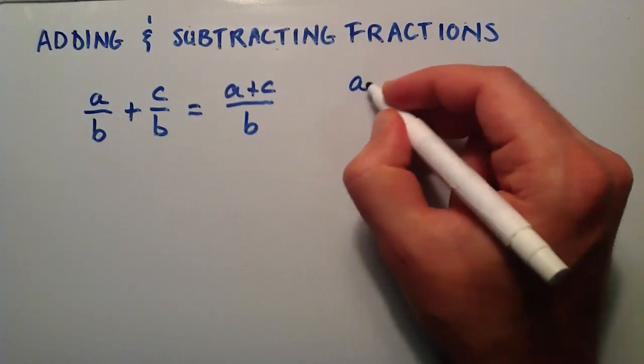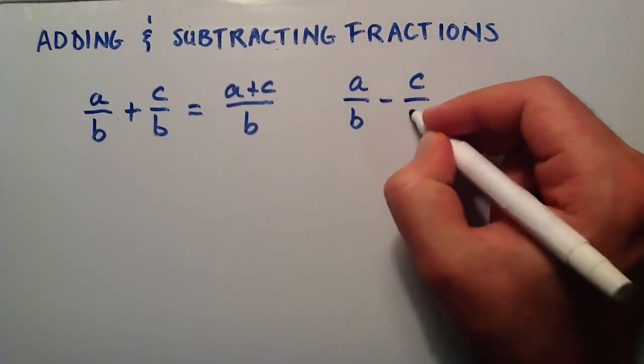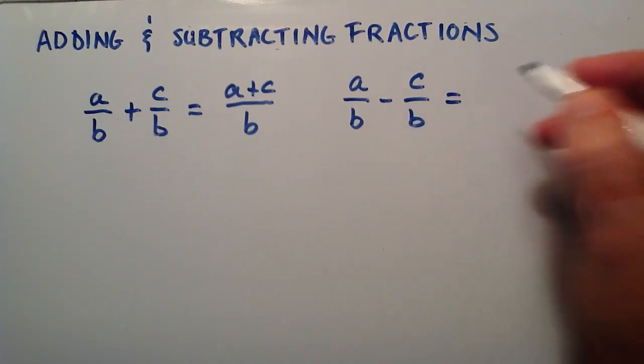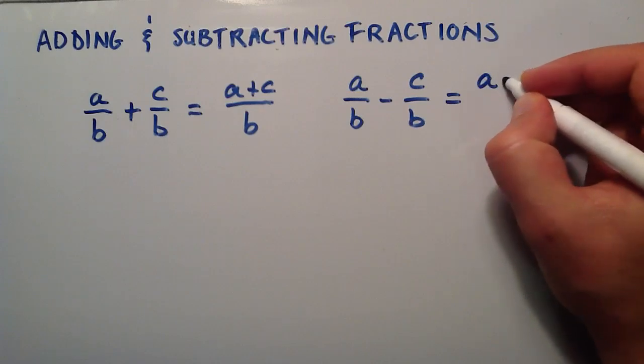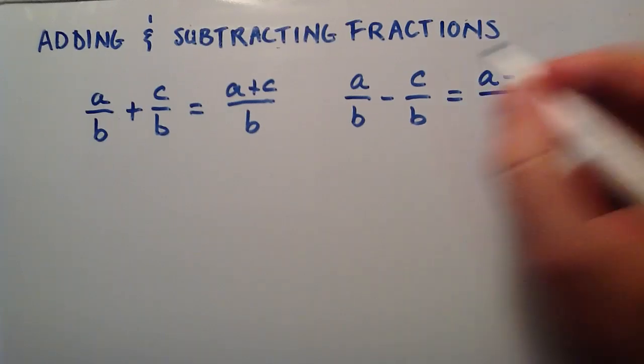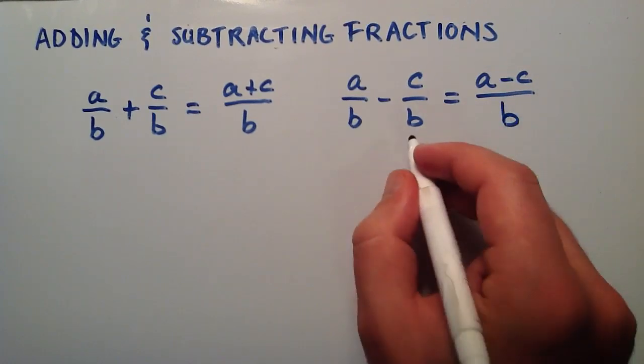And likewise, if we have a divided by b minus c divided by b, since we have a b on the bottom, both of them are the same number, we can simply say this is a minus c, this numerator minus that numerator, divided by the common denominator b.